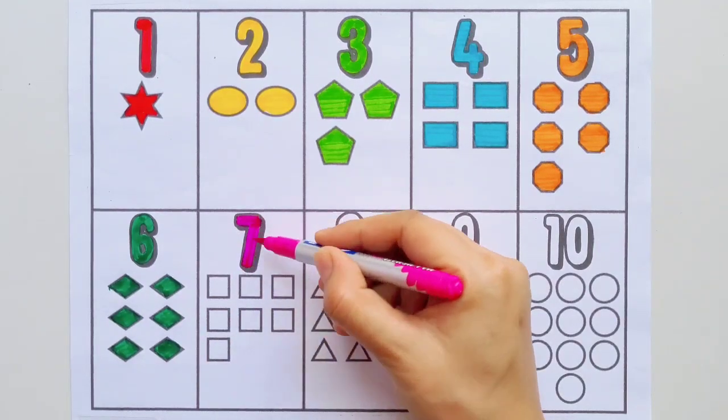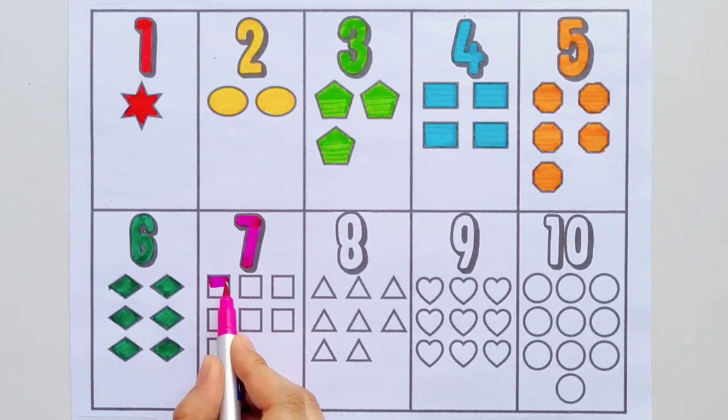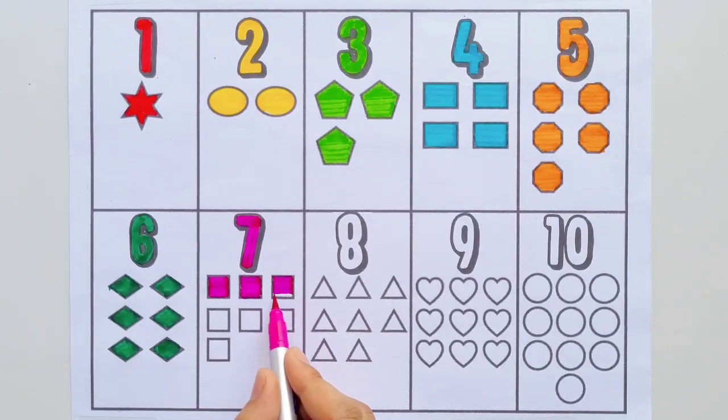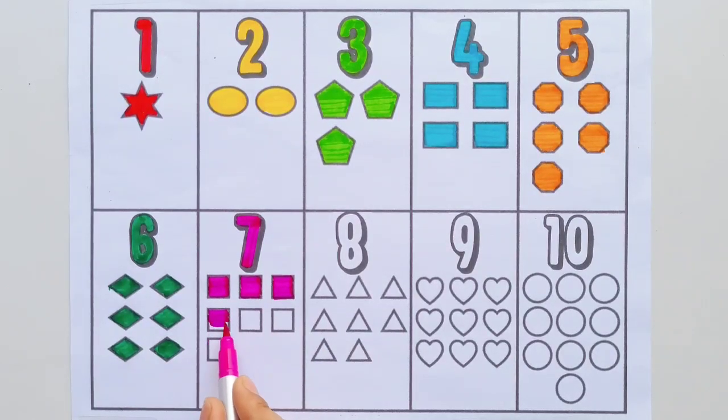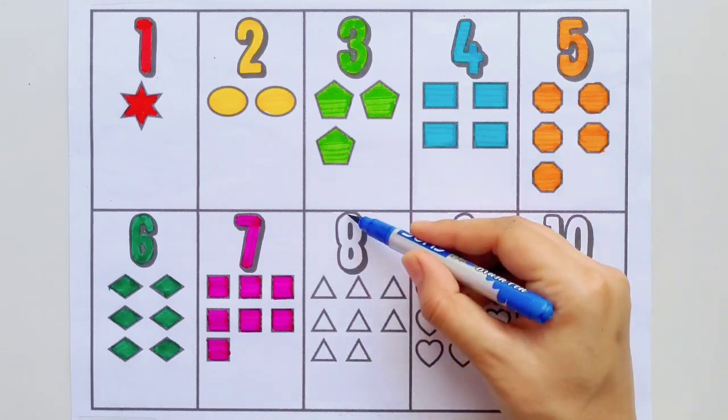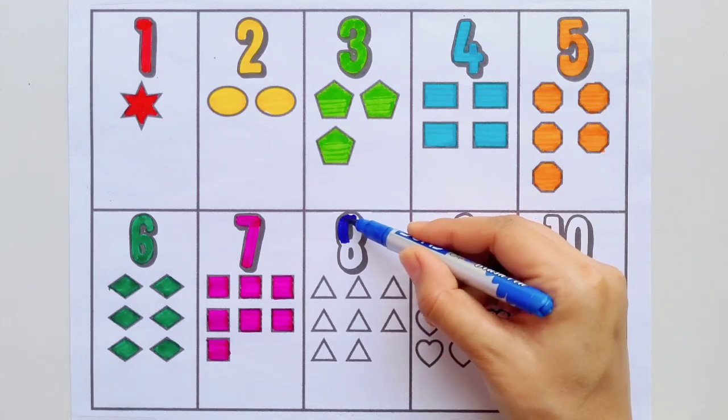Seven. One, two, three, four, five, six, seven. Blue color.